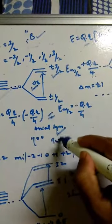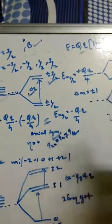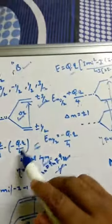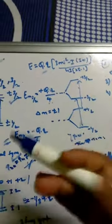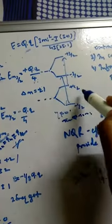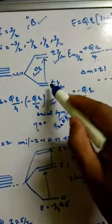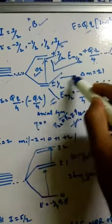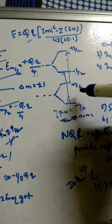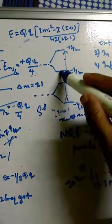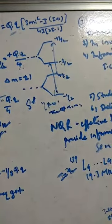When η is not equal to zero — that is, when Qxx ≠ Qyy — it is a more complicated, asymmetric case. The levels ±3/2 and ±1/2 further split, giving additional transitions. This is how more complex NQR transitions arise in the asymmetric case.